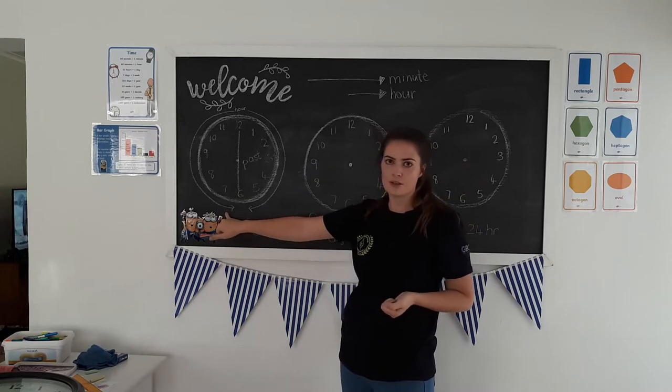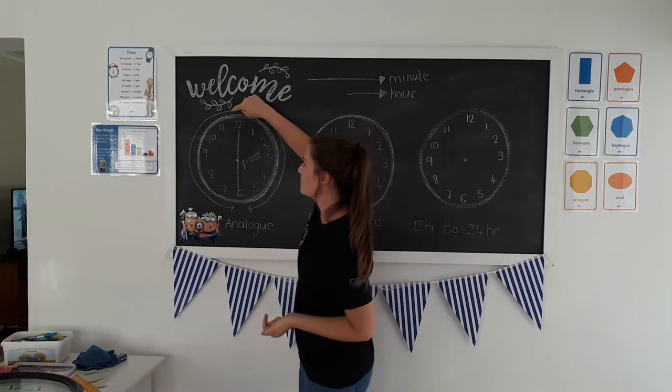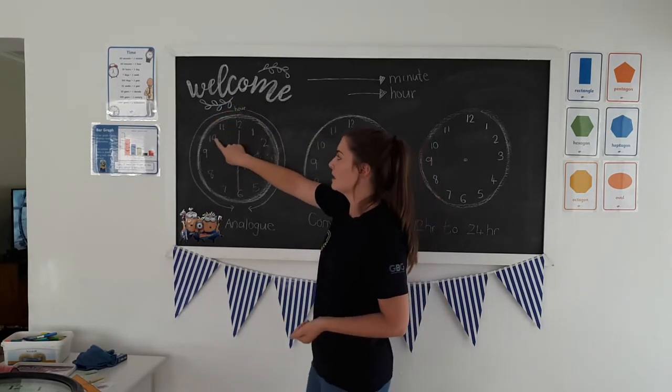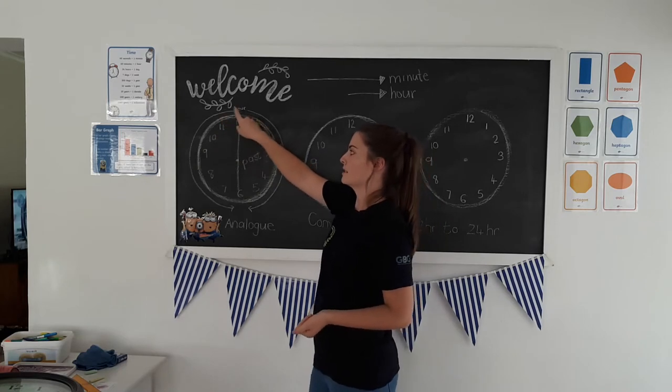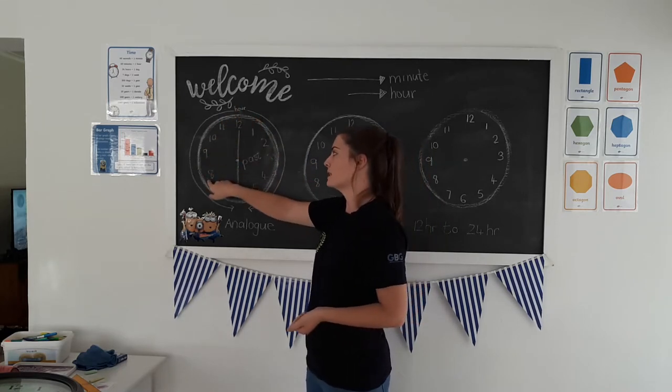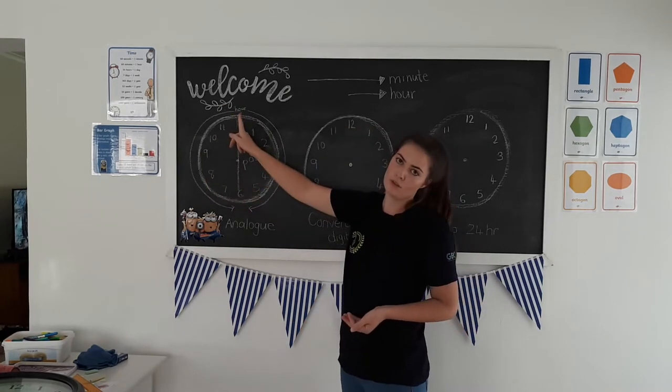This arrow you'll notice goes the other way around. That's because we count five minutes to the hour, ten minutes to the next hour, quarter to the next hour, twenty to the next hour, and twenty-five to that hour.